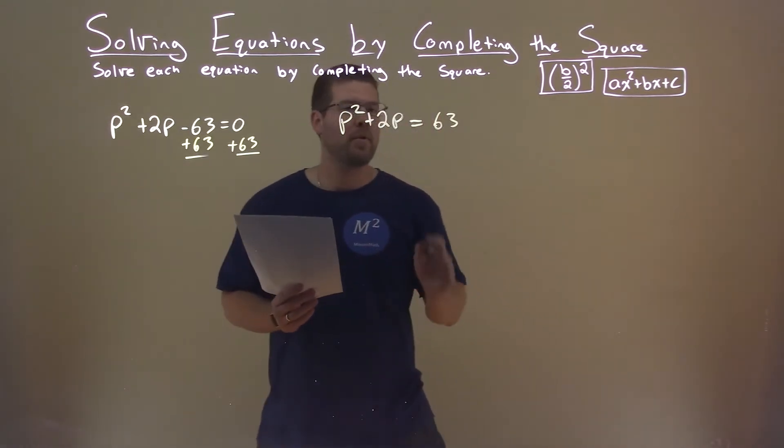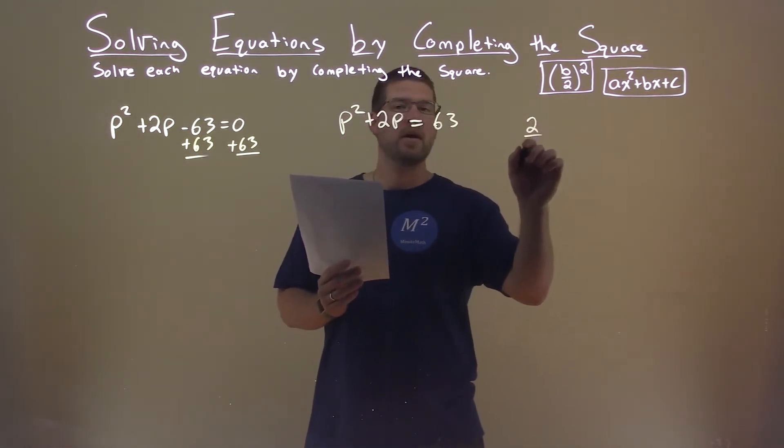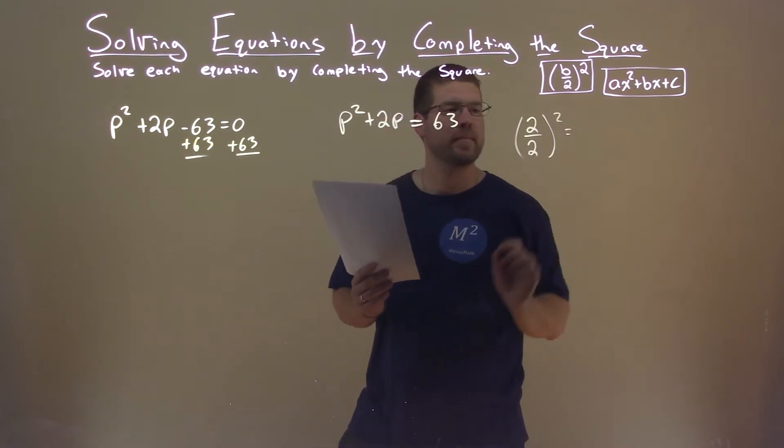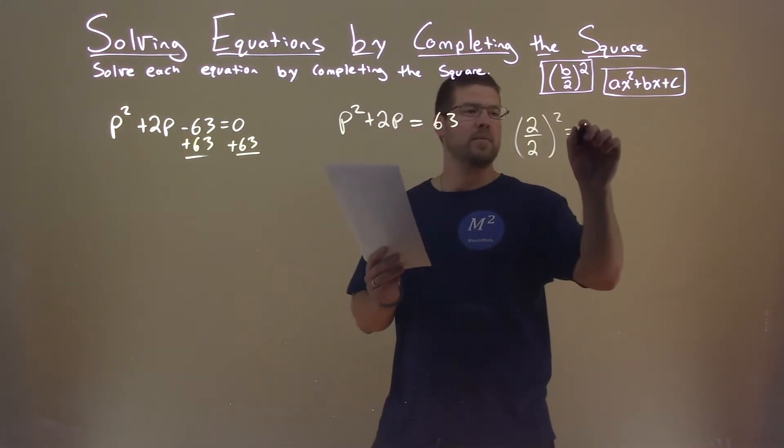Now with that, I'm going to look at my b value, which is 2. I'm going to divide that by 2, and I'm going to square it. That comes out to be just 1.